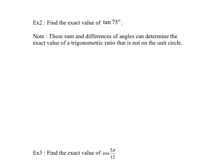Now find the exact value of tan of 75 degrees. We cannot find it directly because 75 degrees isn't on our unit circle. But note — sums and differences of angles can determine exact values of trig ratios not on the unit circle. Using two angles I know, I can say that 75 degrees is a combination of 30 degrees plus 45 degrees.